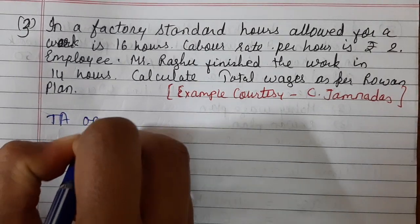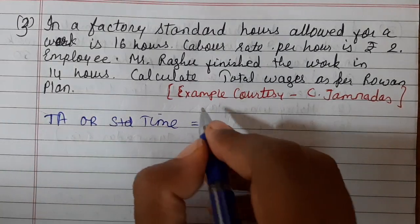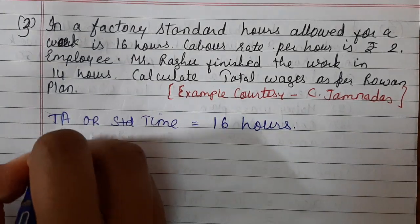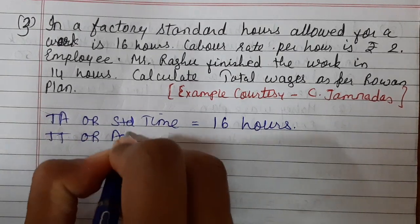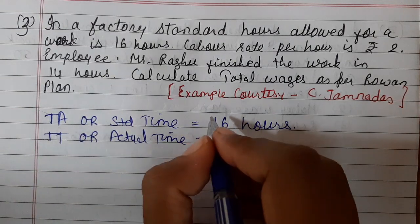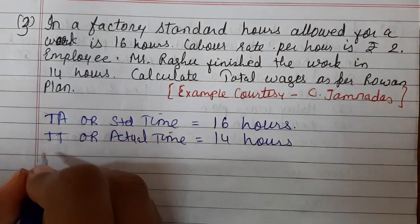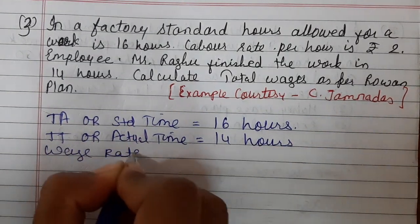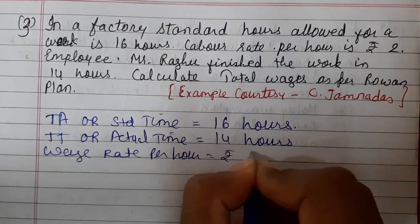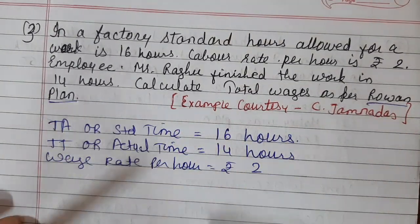So we write down: time allowed or standard time is 16 hours. Time taken by the worker or actual time taken to finish the task is 14 hours. Wage rate per hour is rupees 2. We need to calculate the total wages as per Rowan plan.